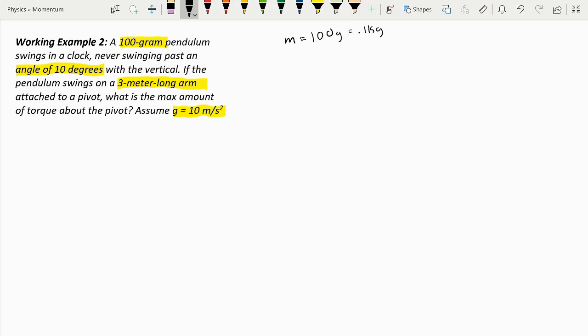The radius is a 3 meter long arm attached to a pivot, so it is 3 meters. The angle is 10 degrees, and the gravity is 10 meters per second squared. And we need to find the torque.